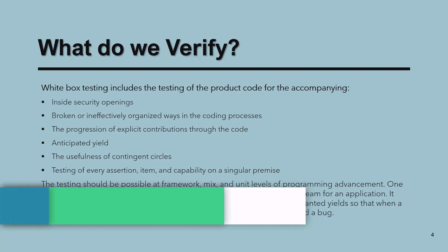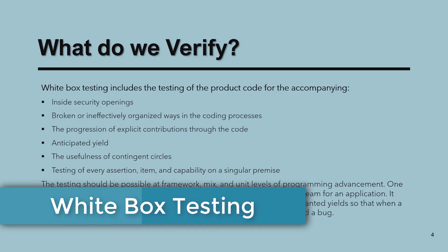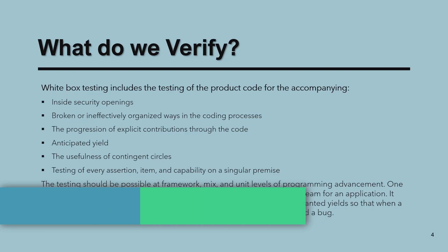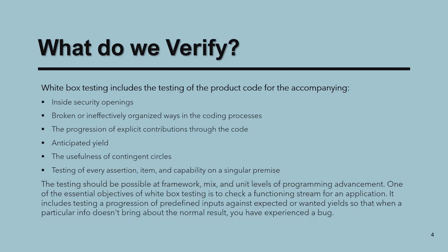In white box testing, we verify security — if there are any loopholes that might impact or corrupt our system or allow an intruder inside. We also verify broken and inefficiently structured code in the coding process. For example, if a coder has written a function that is not properly closed, or if parentheses, semicolons are missing, or arguments are not proper — we verify these broken areas of code.